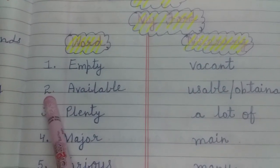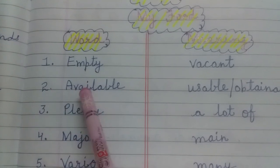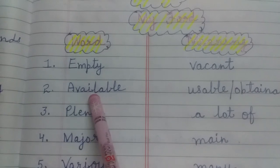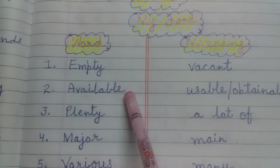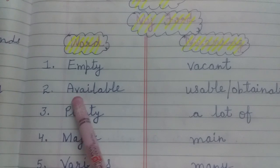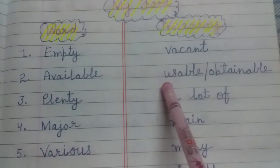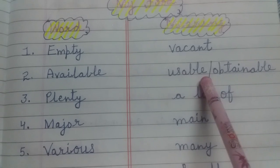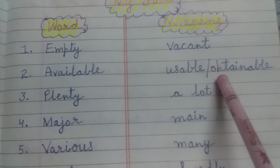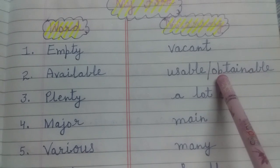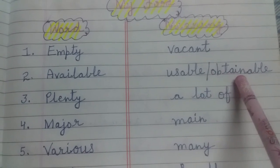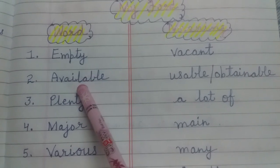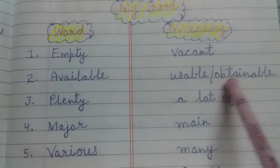Let's read our second word. Our second word is available — A-V-A-I-L-A-B-L-E — available. Second word: available, meaning usable — U-S-A-B-L-E — usable, or obtainable — O-B-T-A-I-N-A-B-L-E — obtainable. Available meaning: usable or obtainable.